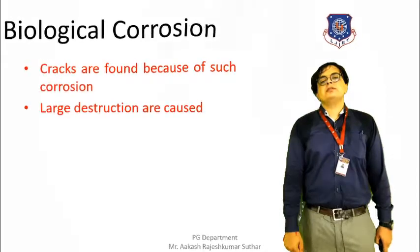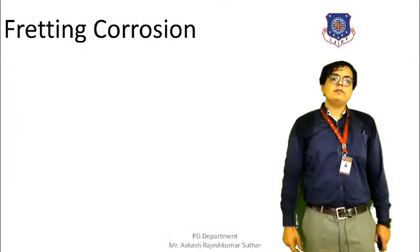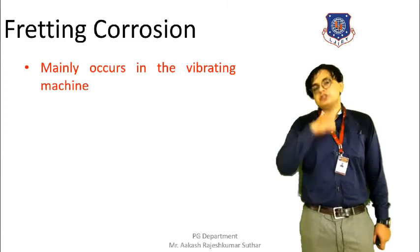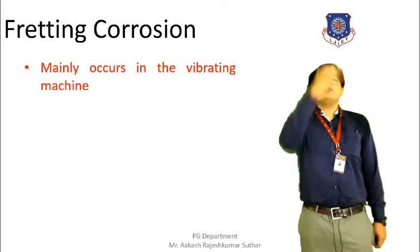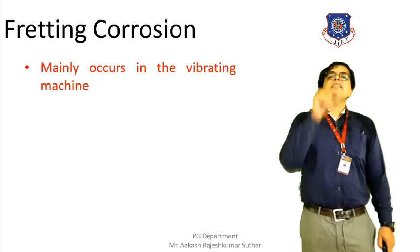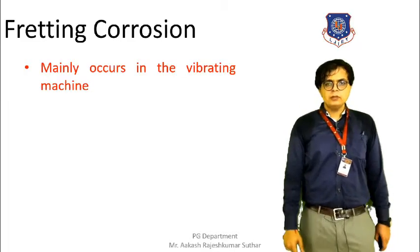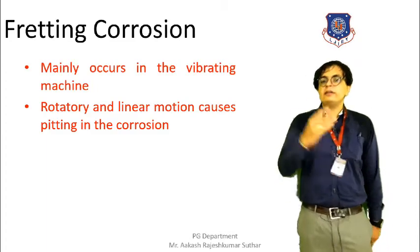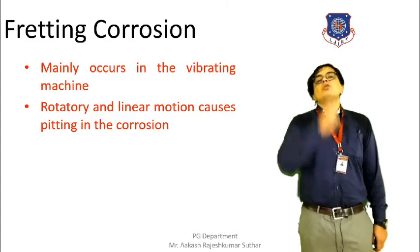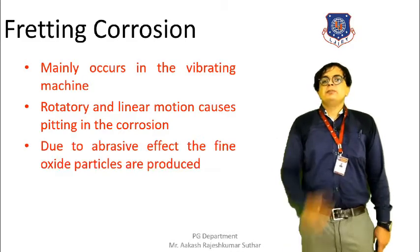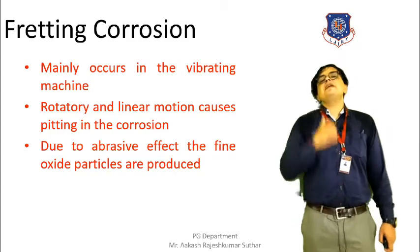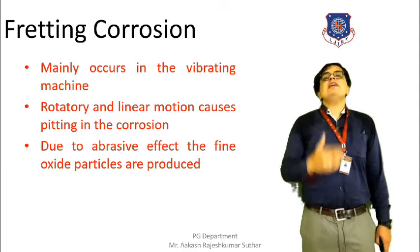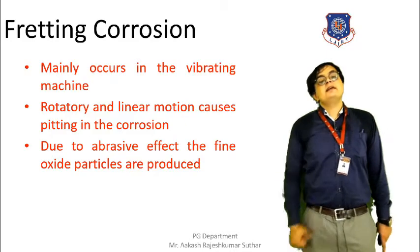Moving to the next type — fretting corrosion. The keyword of fretting corrosion is vibration. It mainly takes place in vibratory machines. The corrosion caused because of vibration is termed fretting corrosion. Due to rotational and linear motion, pitting on the corrosion takes place on the metal surface. This rotary and linear motion causes an abrasive effect, which produces fine oxide particles. Once these fine oxide particles are produced, fretting corrosion has occurred.